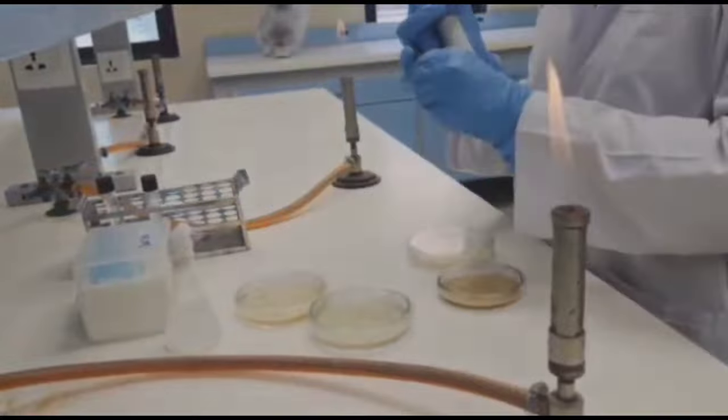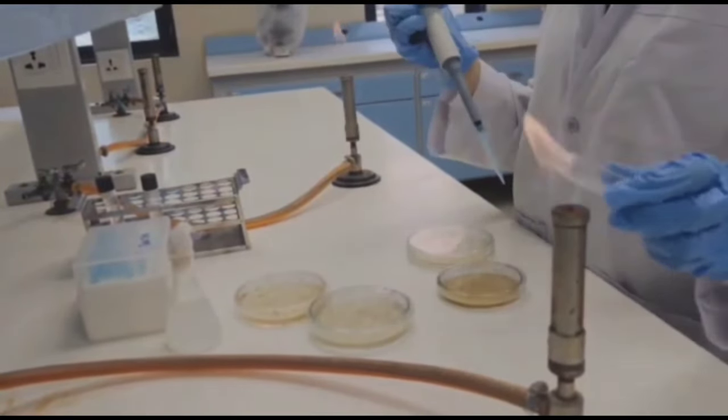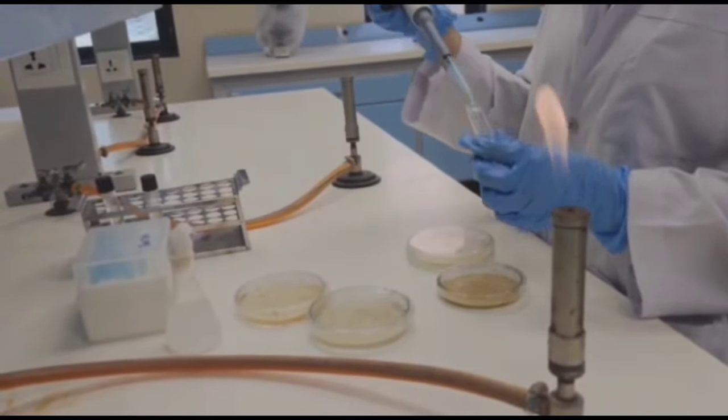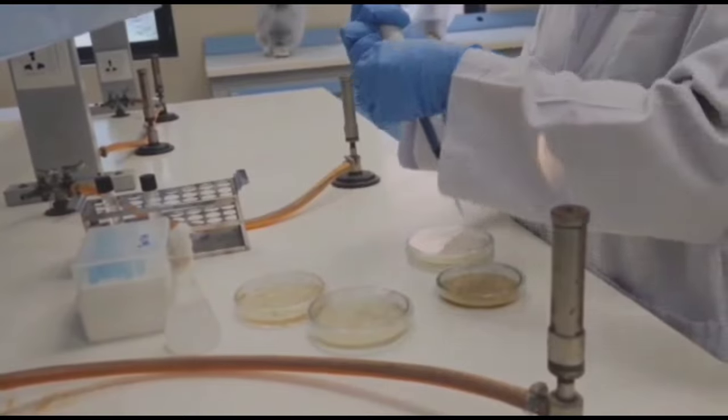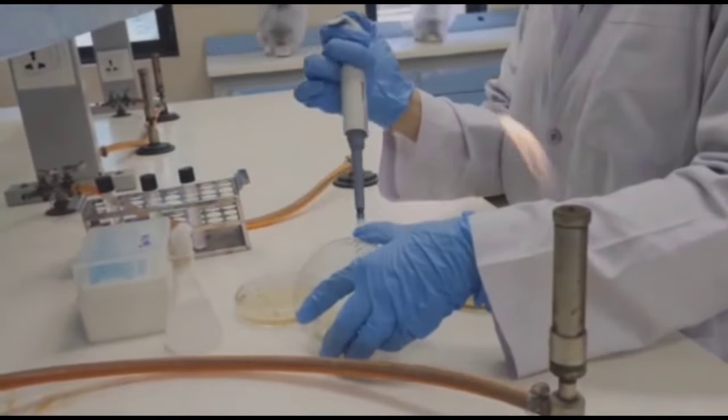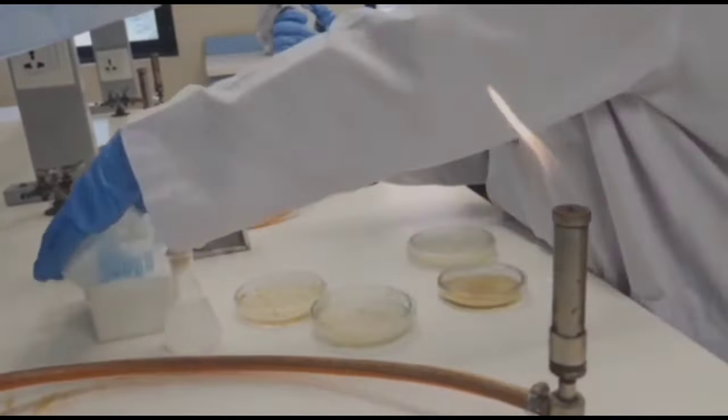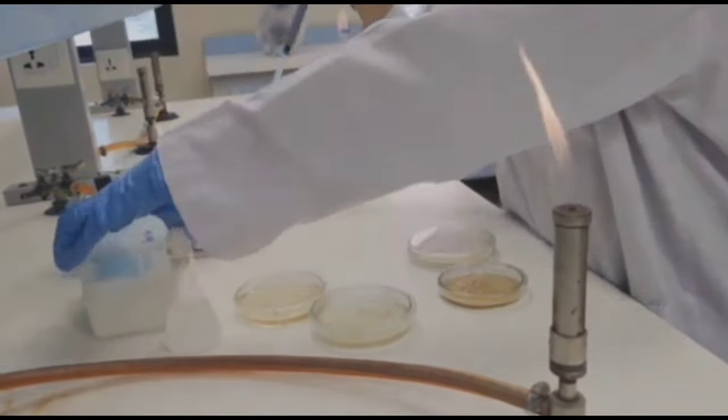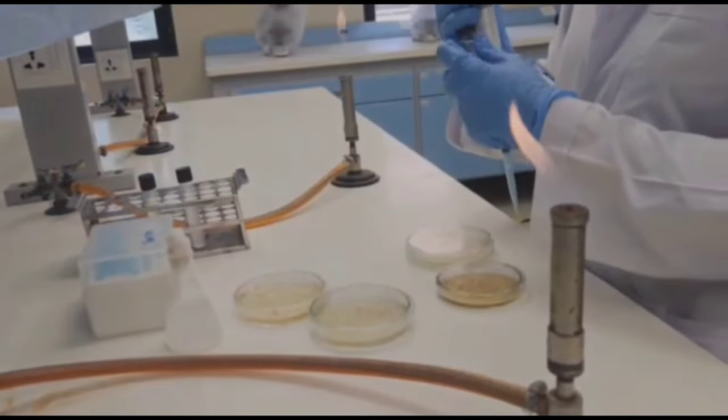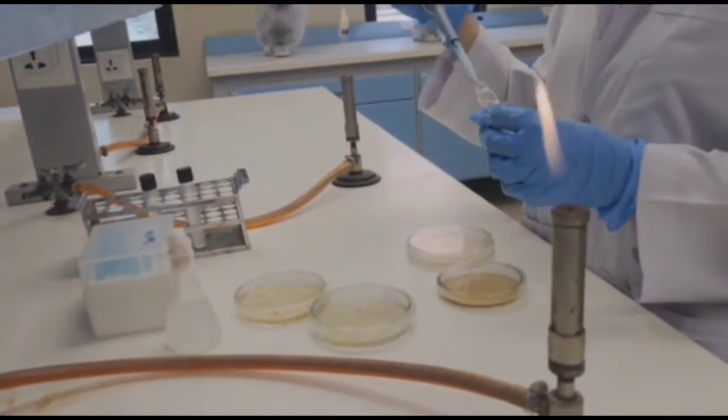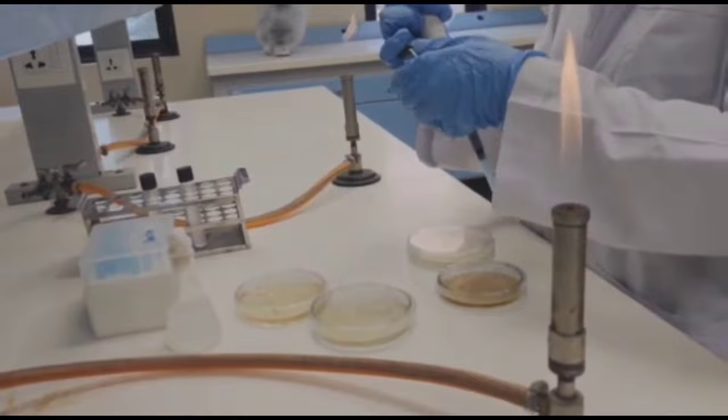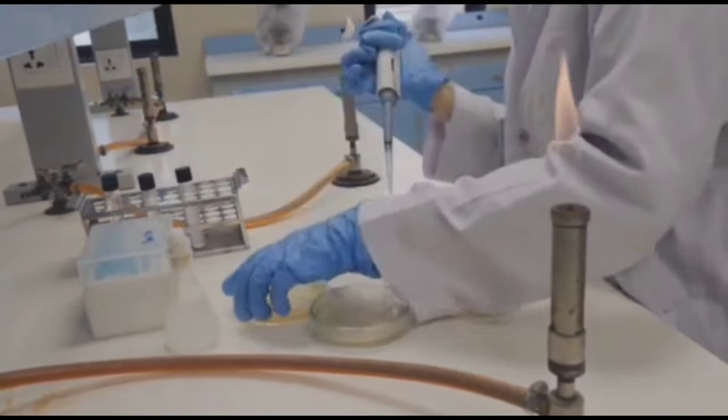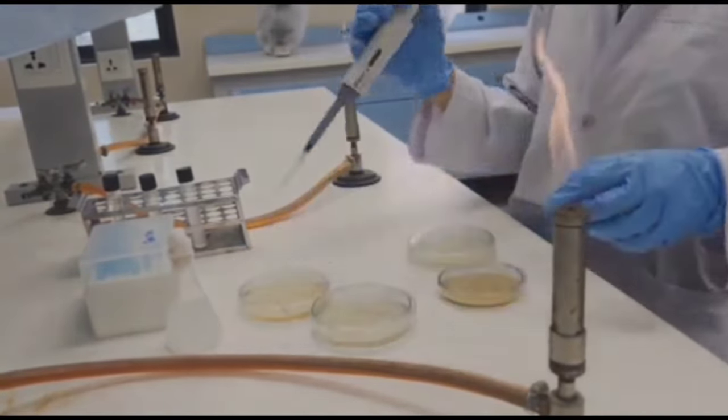After that we will change the tip of our micropipette and then inoculate second dilution into nutrient agar to check colony forming units in second dilution. Then we will again change the tip of the micropipette and then inoculate a solution of last dilution into nutrient agar to check the growth of colony forming units present in last dilution.